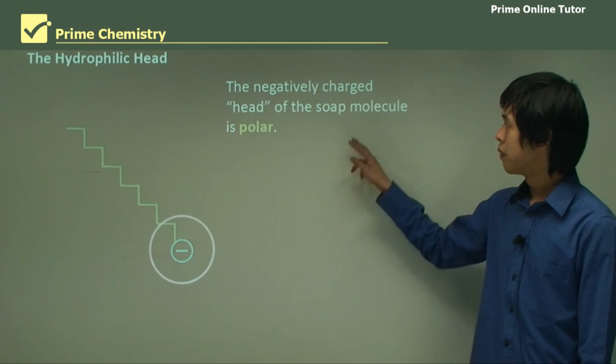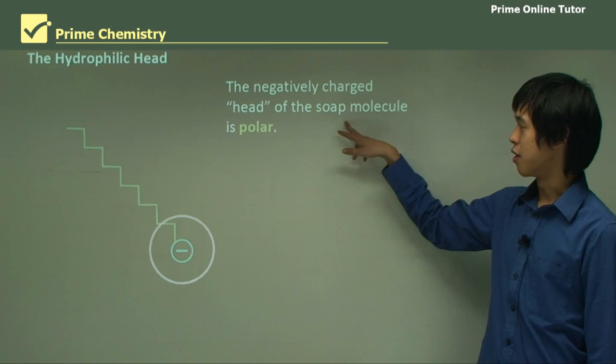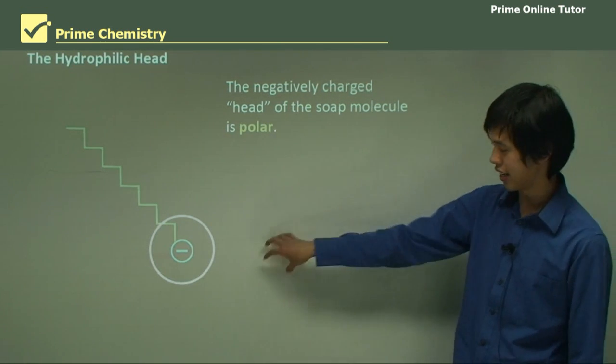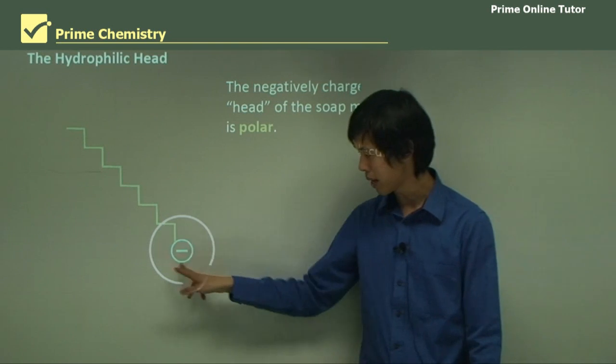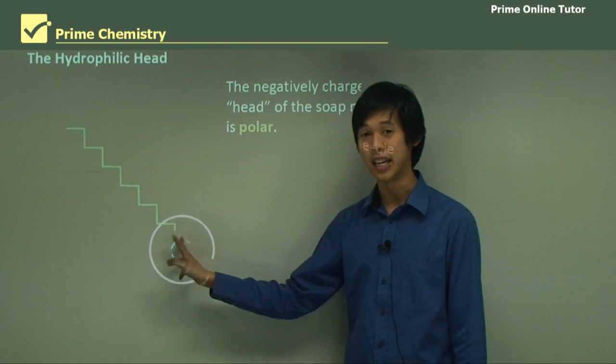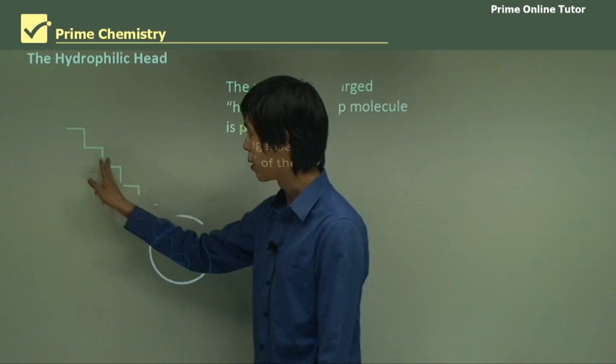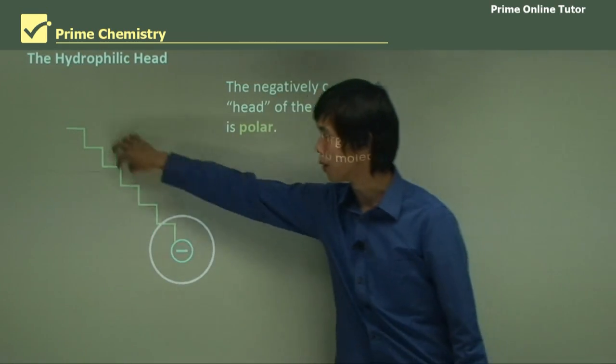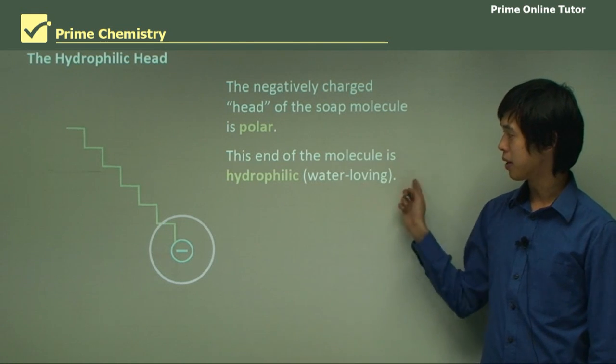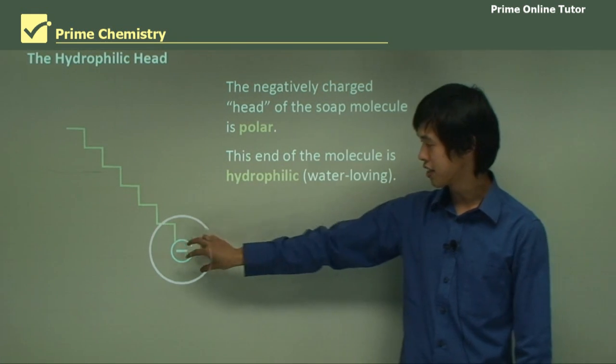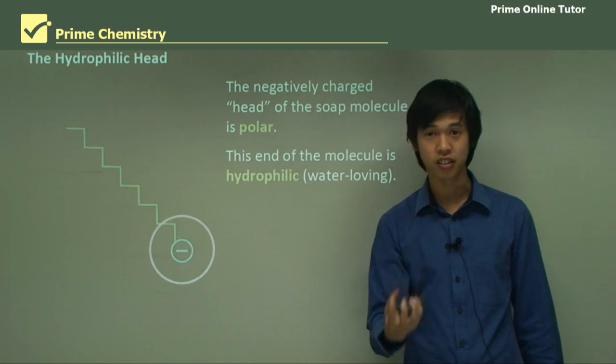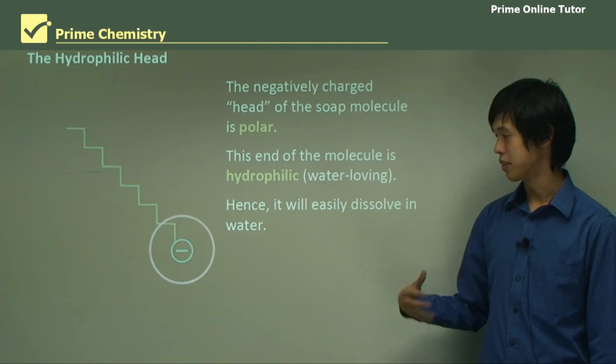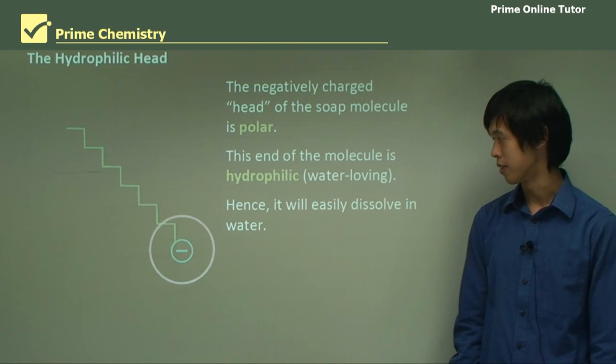How does it actually work? The negatively charged head of the soap molecule is polar. When the sodium left, it was dissolved, it left behind a negatively charged head here. The rest of the soap molecule is non-polar. The end of the molecule is hydrophilic. Because it's polar, it's charged, it can bond with water, hence it will dissolve easily in water. It will try and mix with the water as much as possible.